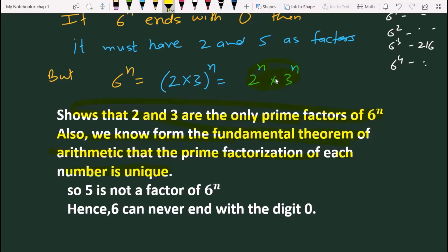Now, if 2 and 3 are unique, then it cannot be 5. So 5 is not a factor of 6^n. When it is not a factor, then 6 to the power n can never end with the digit 0. That's why 6^n will never end from 0.